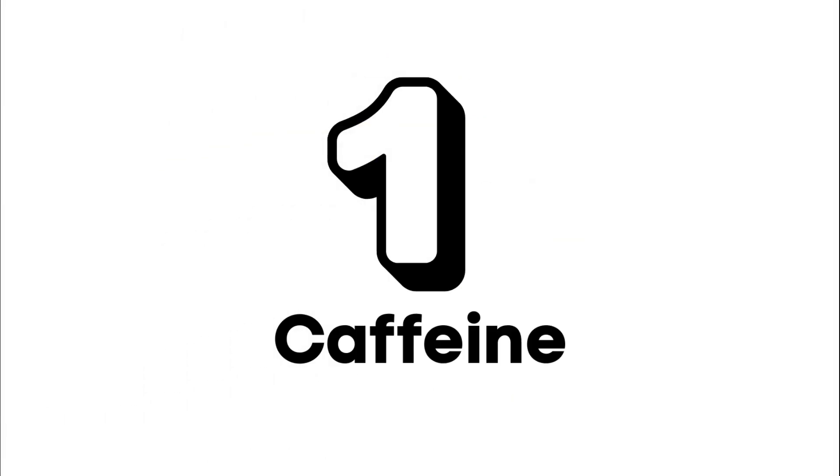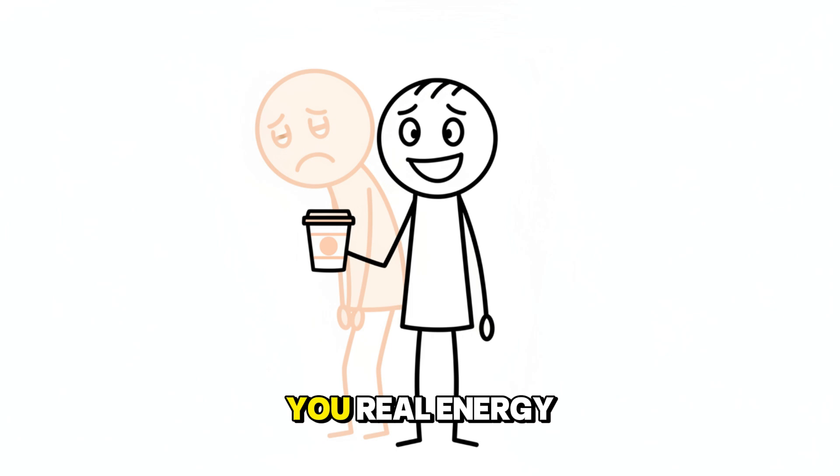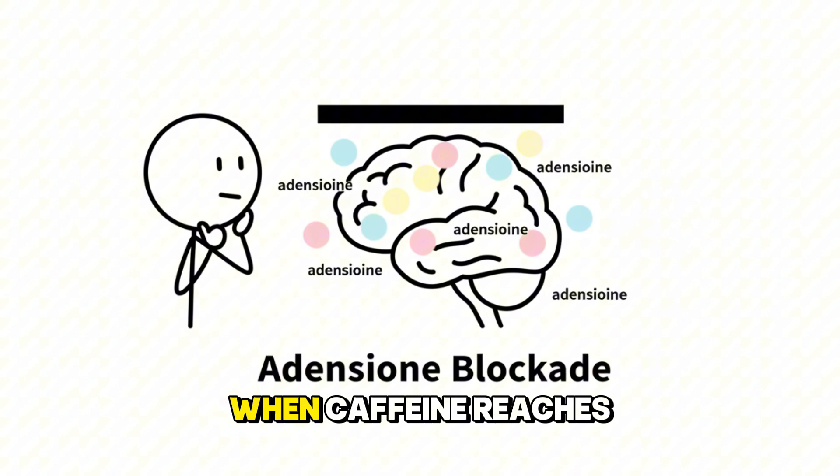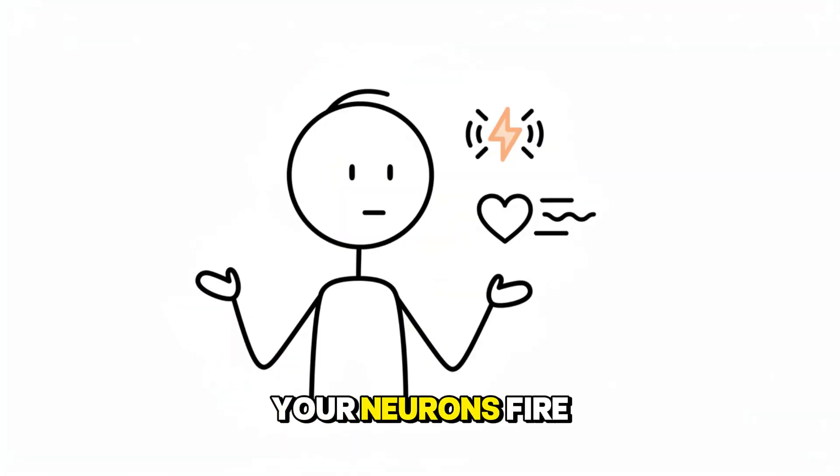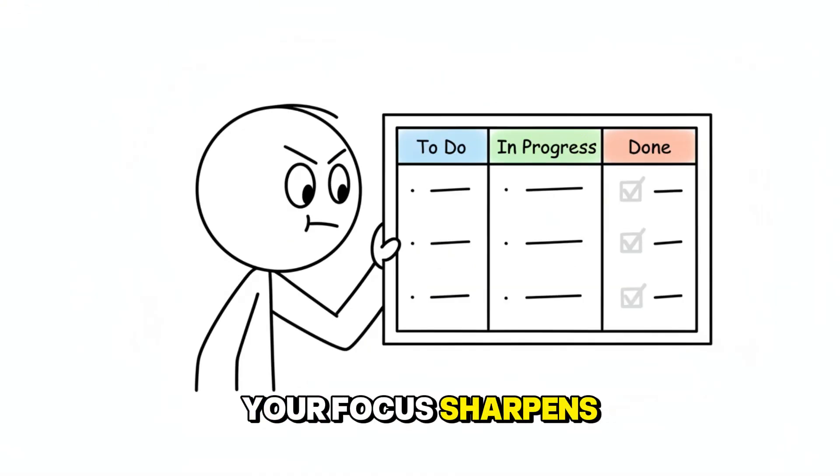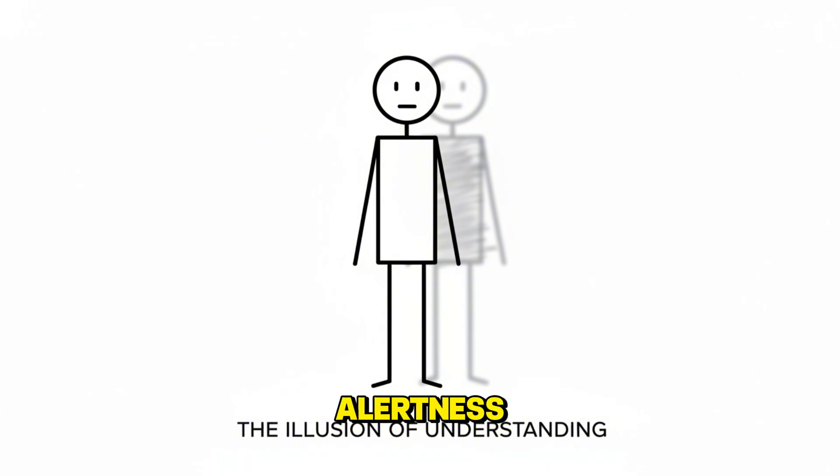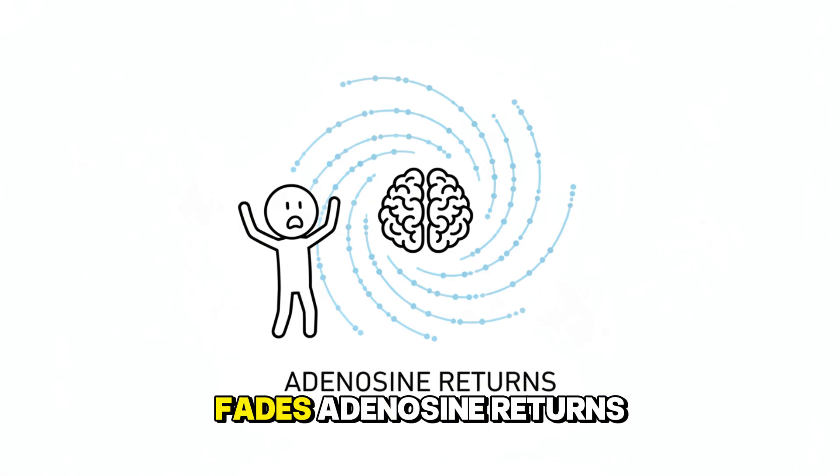Caffeine doesn't give you real energy. It temporarily hides tiredness. When caffeine reaches your brain, it blocks adenosine, the chemical that naturally signals fatigue. Your neurons fire faster, your heart rate rises, your focus sharpens. And for a brief moment, the world seems clearer and more organized. But this clarity is not true alertness. It is a delayed fatigue response. When the effect fades, adenosine returns all at once.